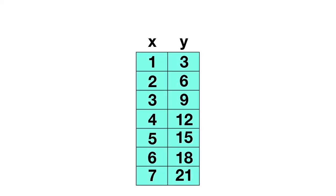Now it's time for you to practice on your own. Here's a table of inputs and outputs. Is this a function or a relation? When you look at this table, you see that each input is only listed once. Therefore each input has only one output. This is a function.